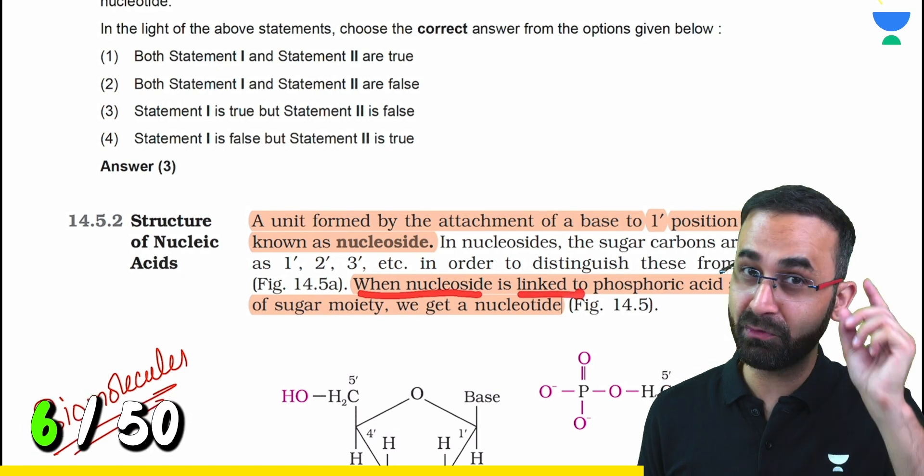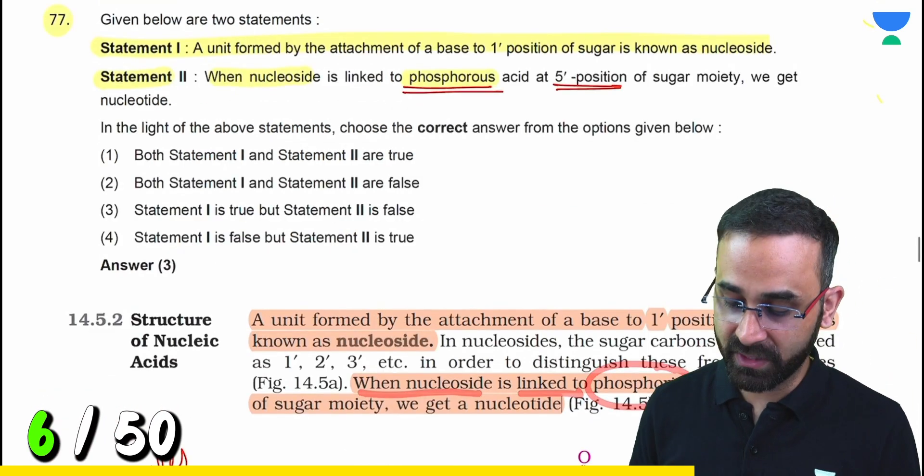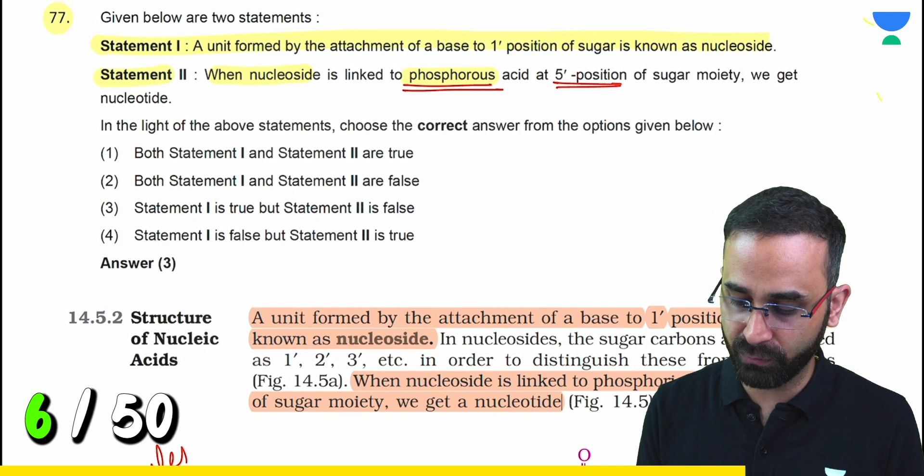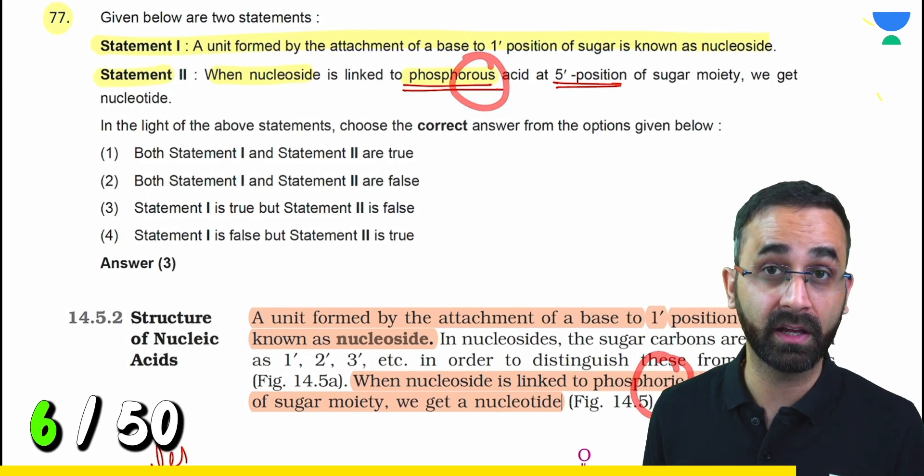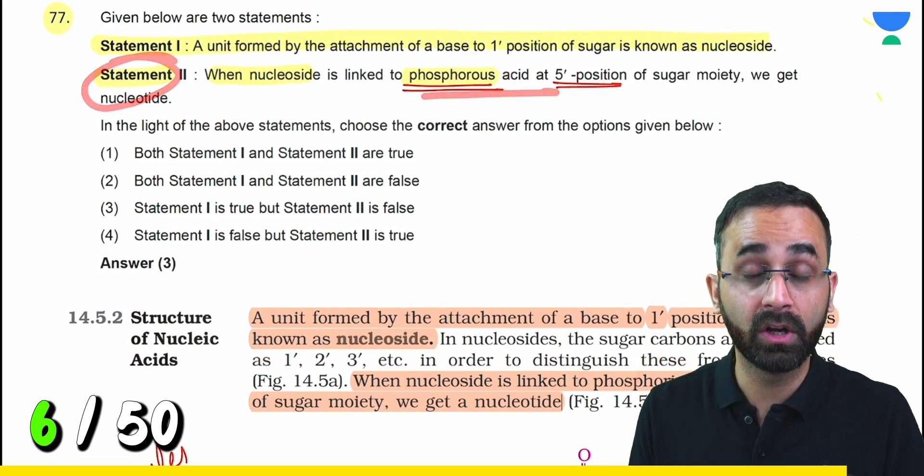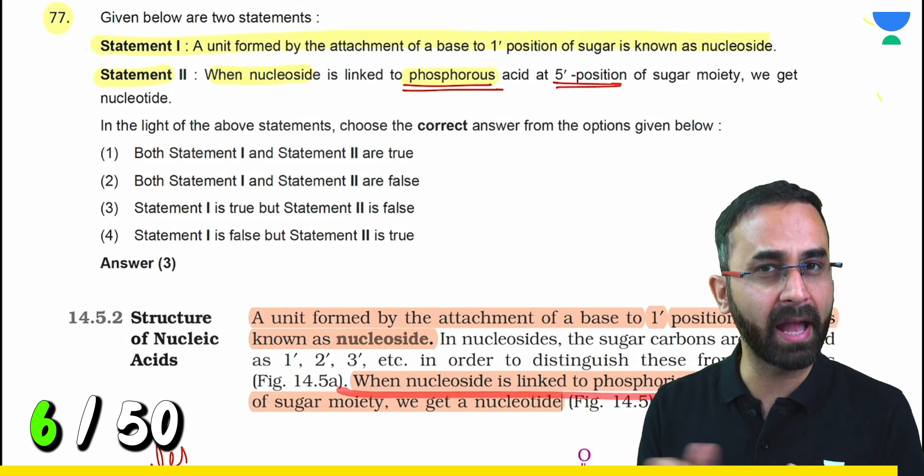When nucleoside is linked to phosphoric acid... They made this minor change: phosphorous instead of phosphoric, and that's why statement 2 is wrong. You can see how perfectly it matches.